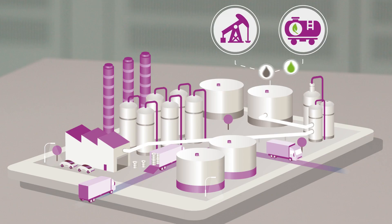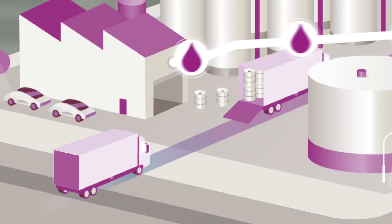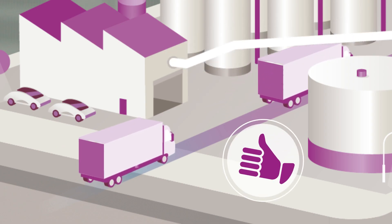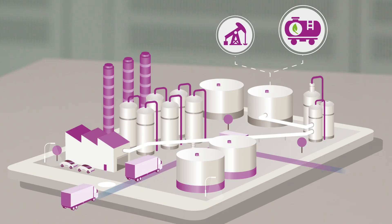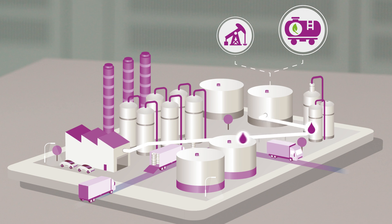Although we have changed the feedstocks in our production, we offer products of the same quality and highest performance to our customers. At the same time, we are saving fossil resources. This is possible using mass balance process. Here fossil and alternative raw materials are mixed early in the chemical value chain and traced throughout the number of production steps.